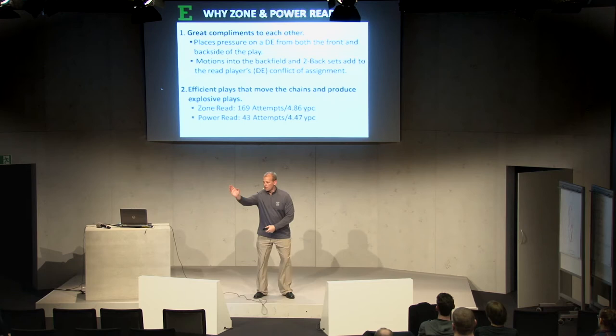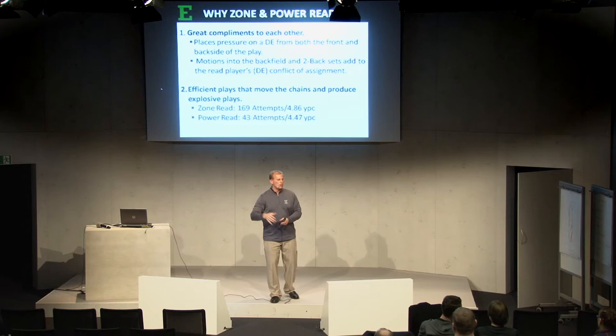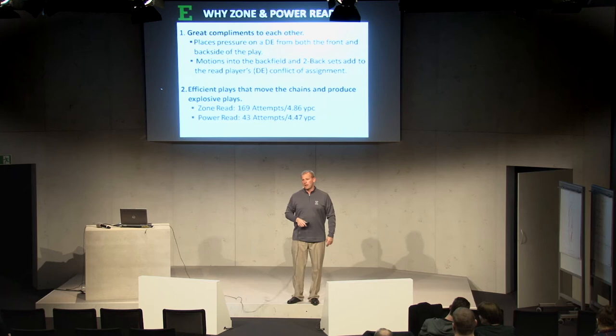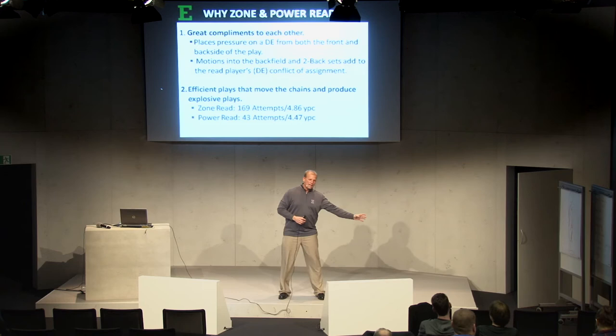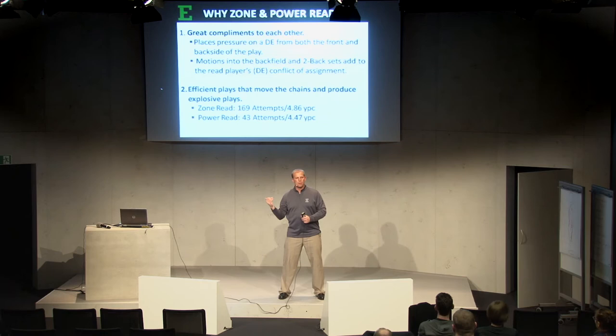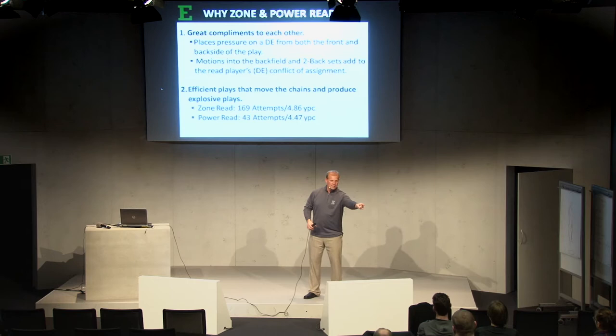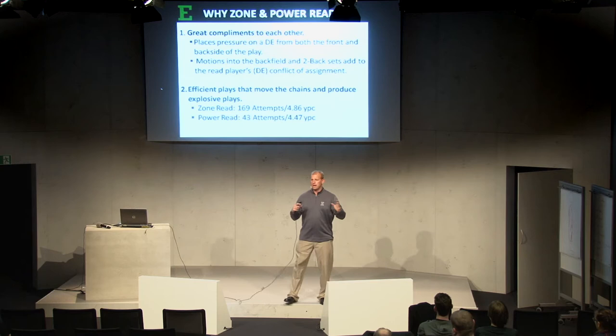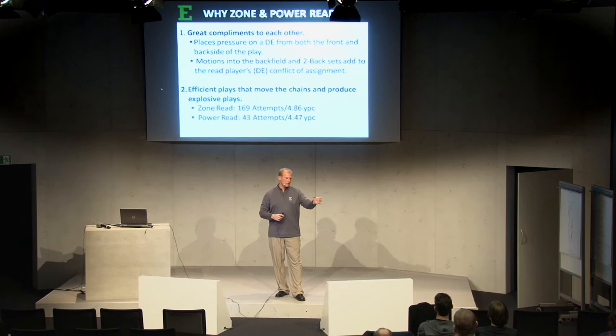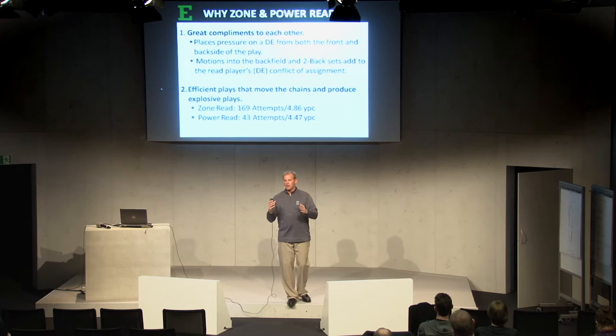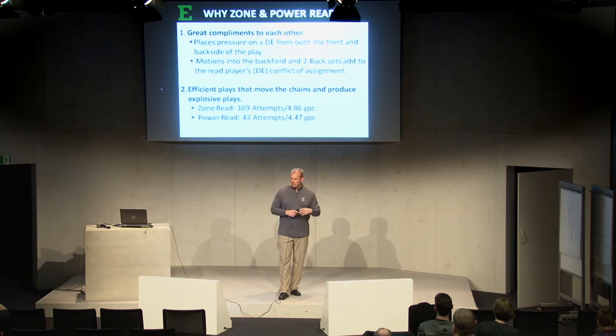That defensive end who had to back away on zone read is now not getting blocked on the power read when he was getting blocked on the zone read. Then we'll take it to the next level — we'll have the tailback here, motion someone into the backfield, and run the power read. So that defensive end not only gets zone read rules but he gets power read rules as well — and vice versa. You can see how they're great complements in isolating those defensive ends, and the man scheme versus the zone scheme with the two concepts really complement each other well.